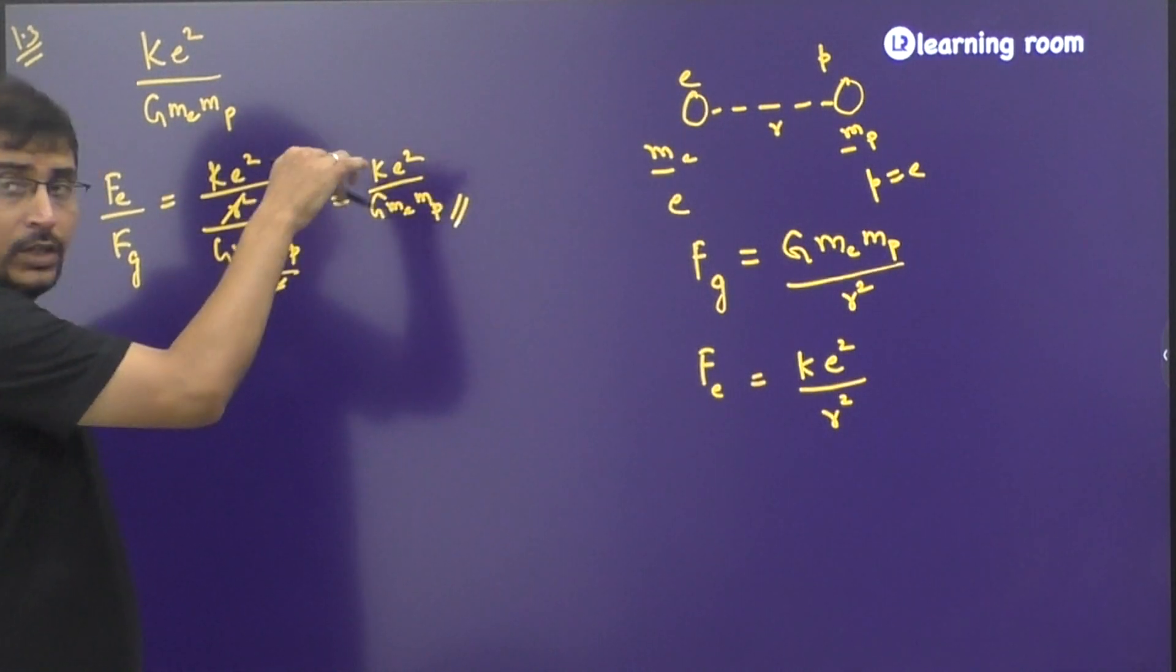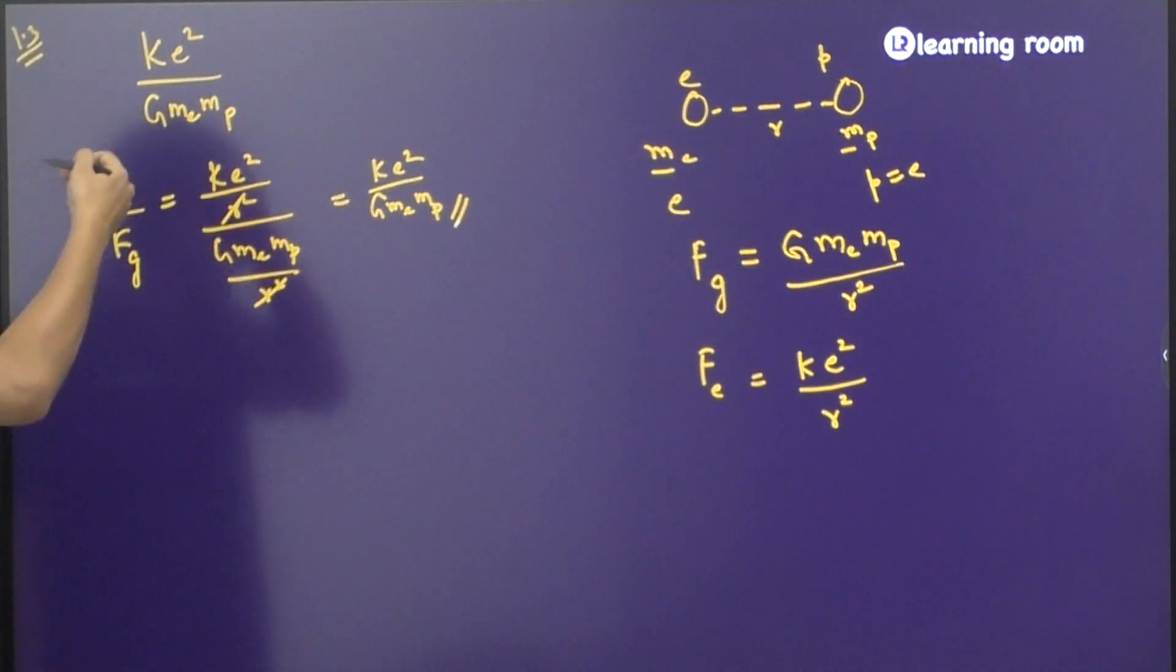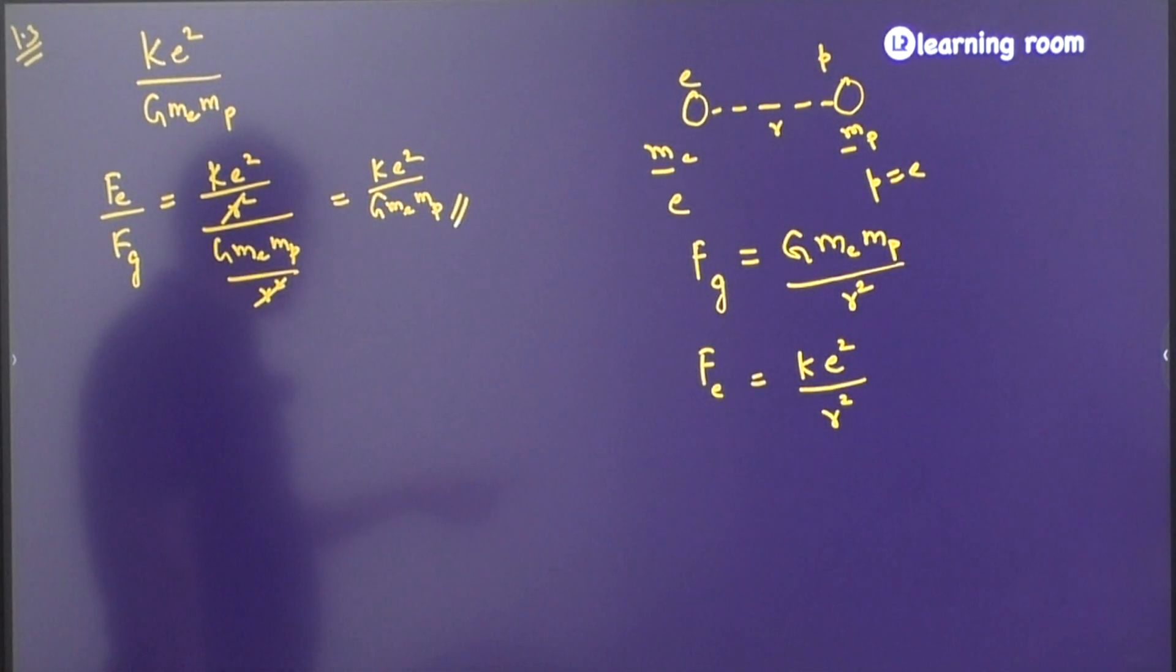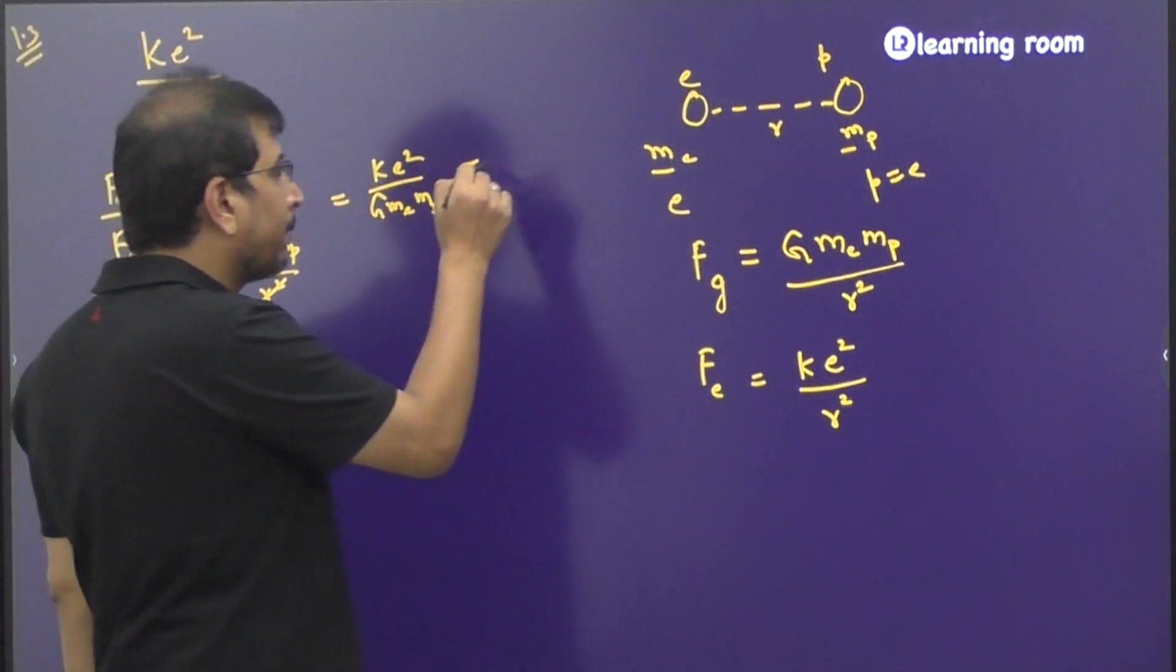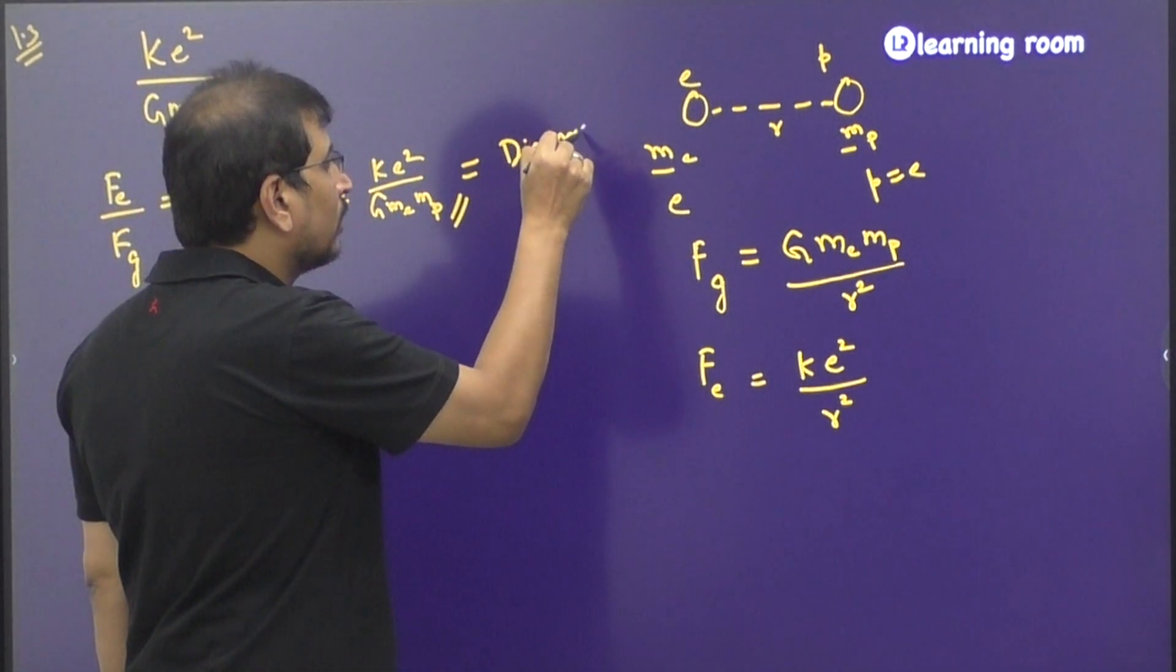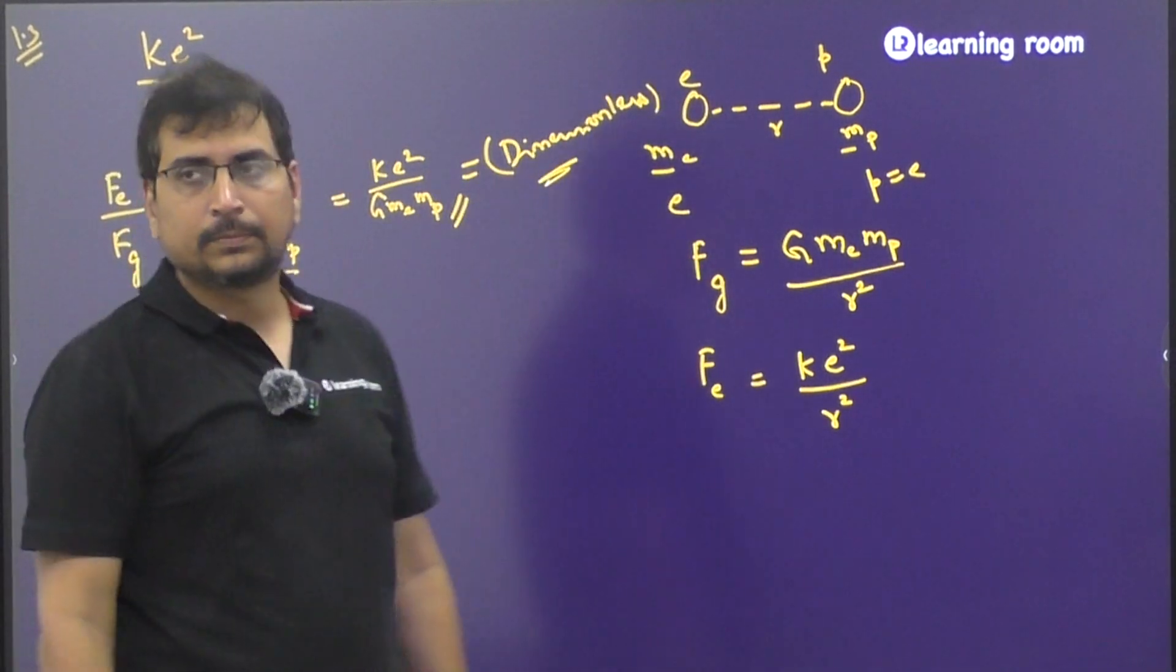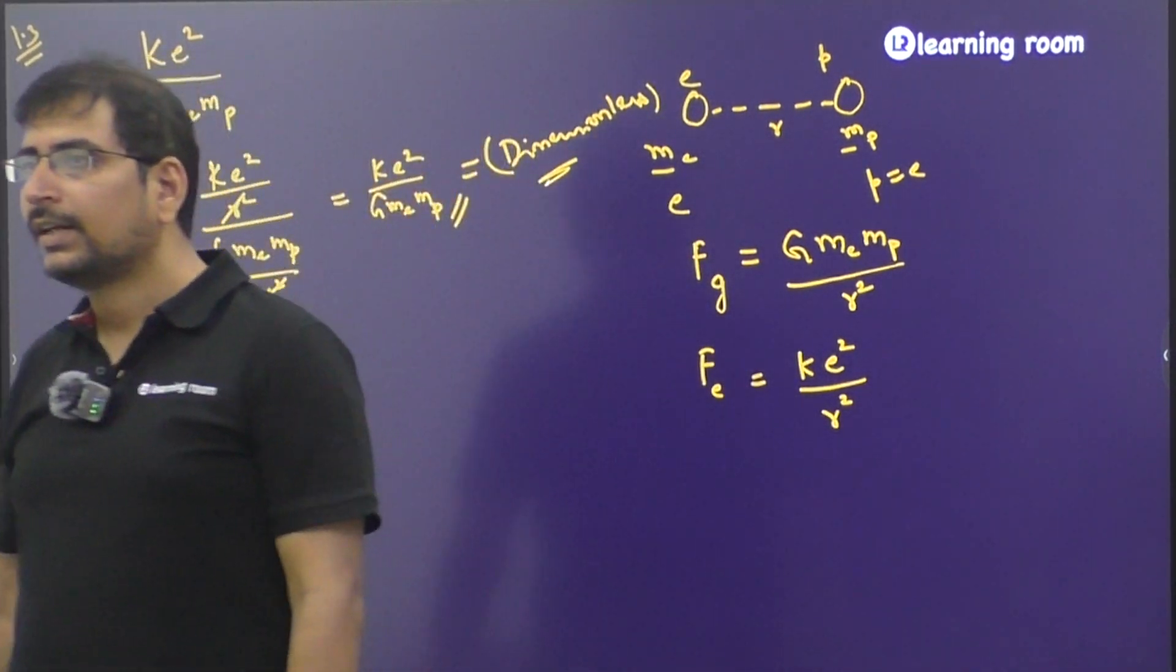Basically this quantity is the ratio of two forces. What forces are they? Gravitational force and the electrostatic force. Since they are the ratio of the same physical quantity, it is going to be dimensionless. Make sense? That is why this is dimensionless.